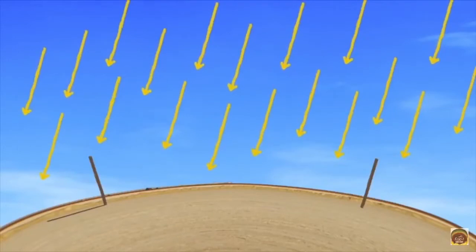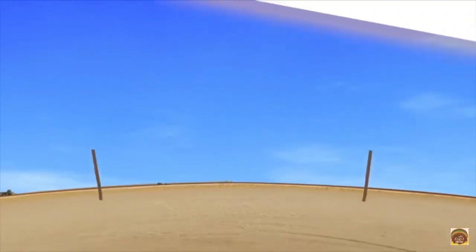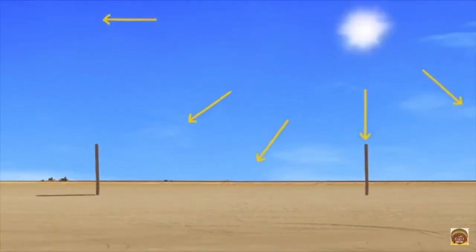The same phenomenon Eratosthenes measured could be explained by a flat earth if the Sun were only a few thousand miles away and 32 miles across. The math would work out the same.